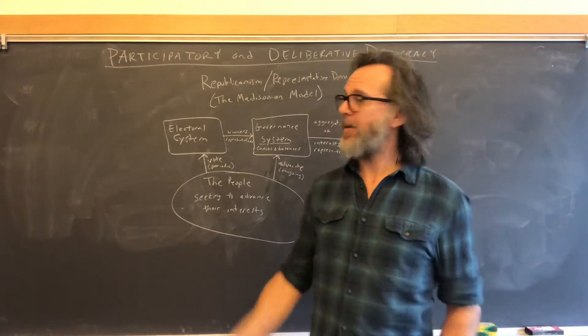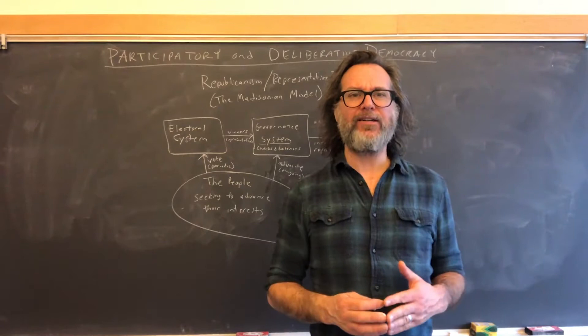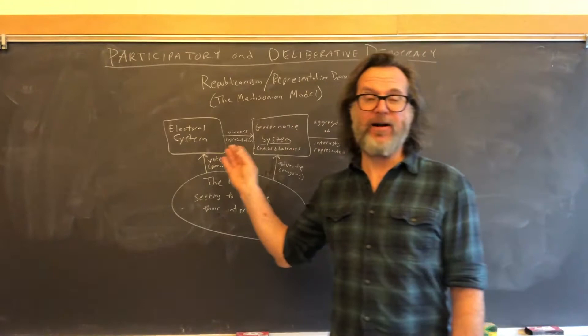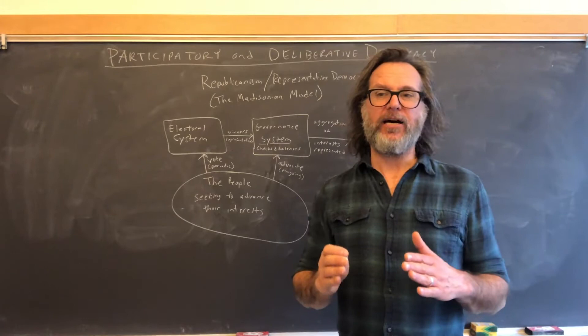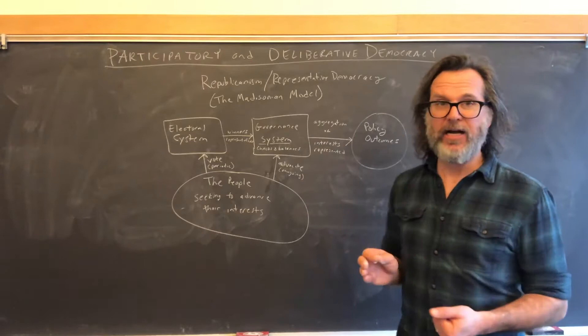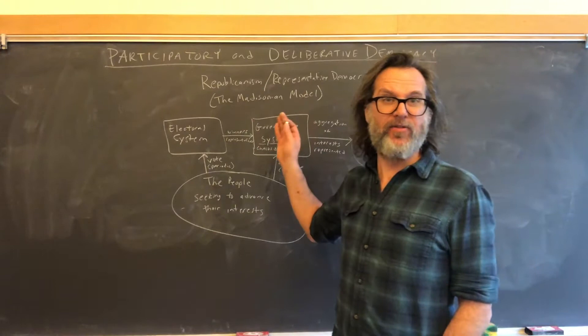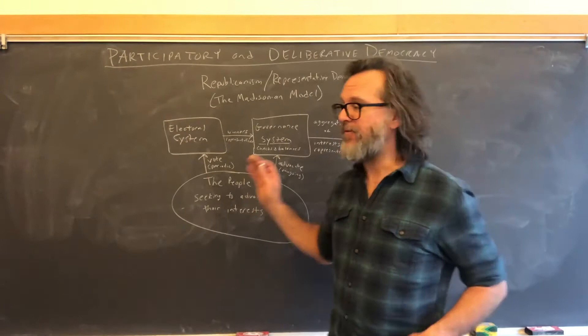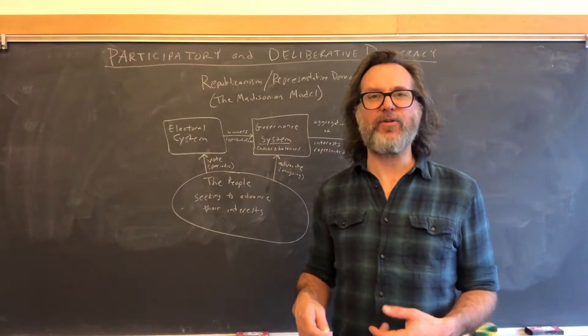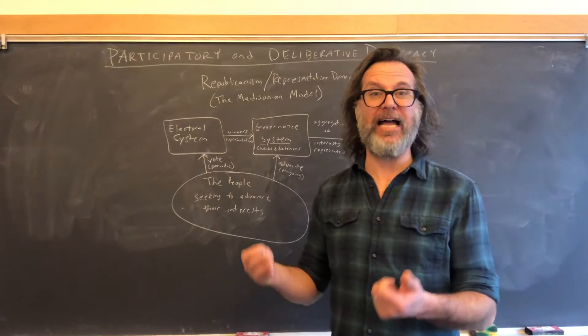In this lecture, I'm going to look at the concepts of participatory and deliberative democracy. I'm going to do that through the lens of contrasting these concepts in democratic theory with republicanism, otherwise known as representative democracy, the Madisonian model of democracy. I'll start by talking about the early American and early Western version of democracy — the representative democracy model — and use that as a way of explaining what advocates of participatory and deliberative democracy are looking for that's different.